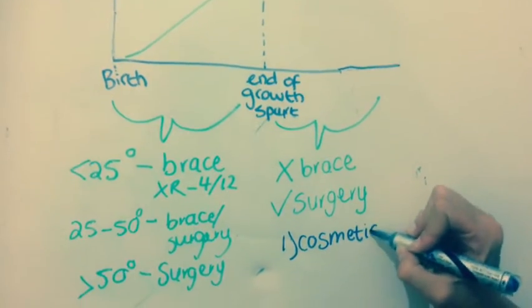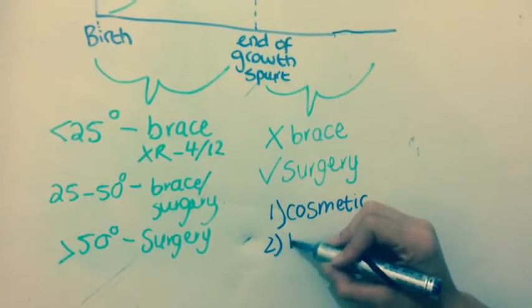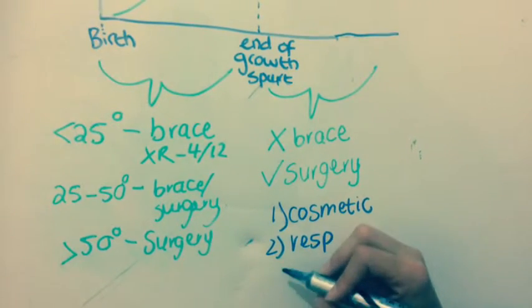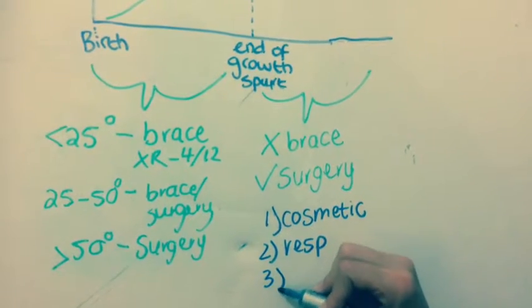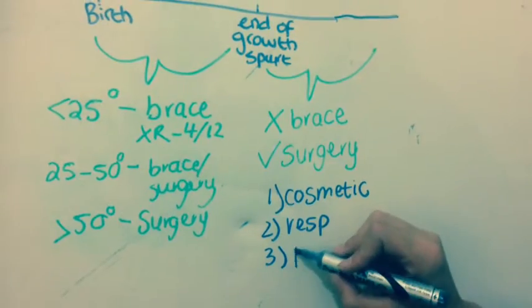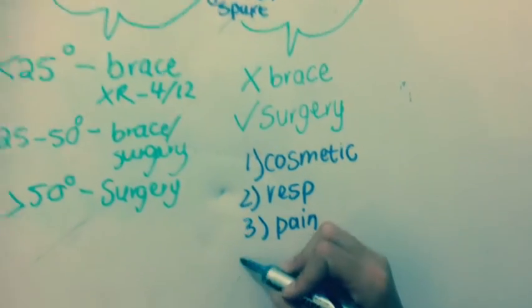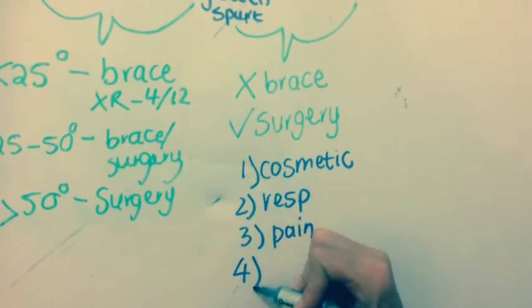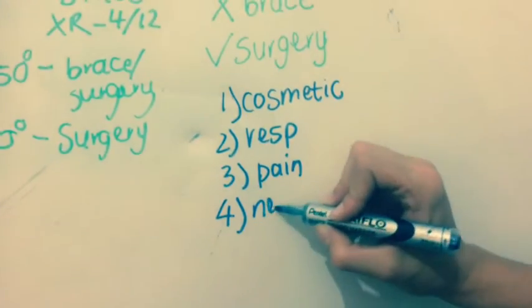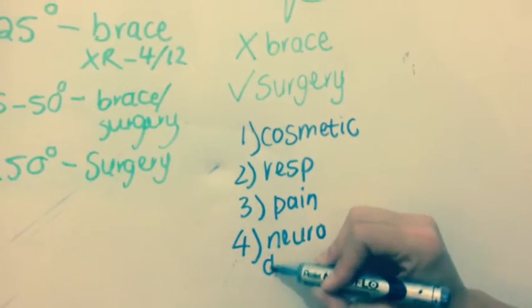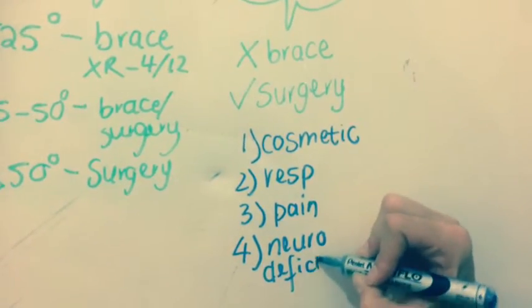The effects on the patient include cosmetic issues, psychological impact due to poor body image, respiratory impairment, pain, which is more frequent in kyphosis, and neurological deficit, usually in the setting of congenital scoliosis with kyphosis.